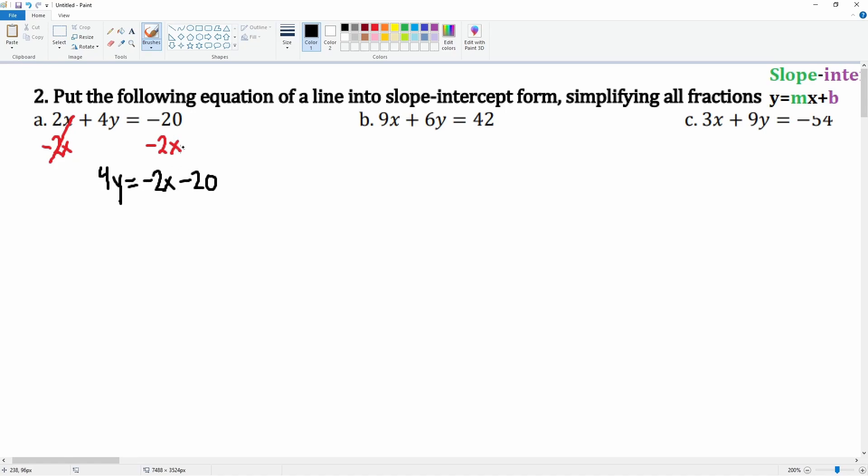These two terms cannot combine because one is a variable, the other one's a constant. Now there's a 4 in front attached via multiplication, so we're going to divide 4 to both sides to everything. This cancels, leaving you with just a y.